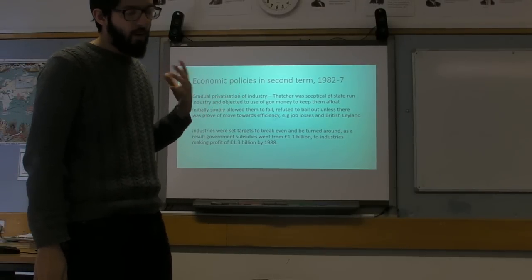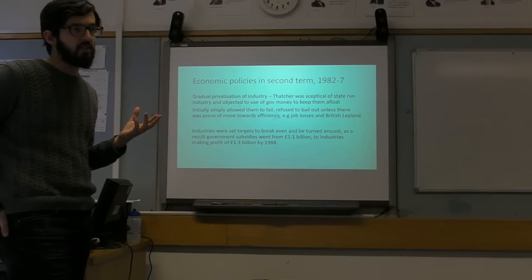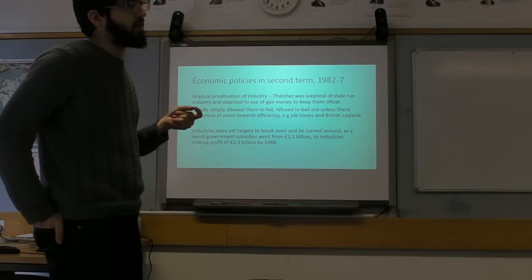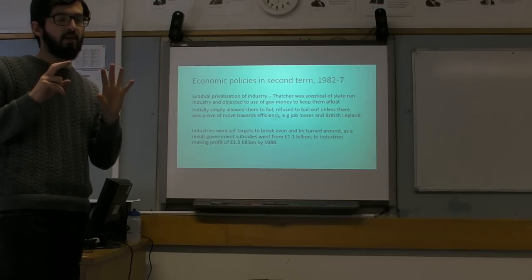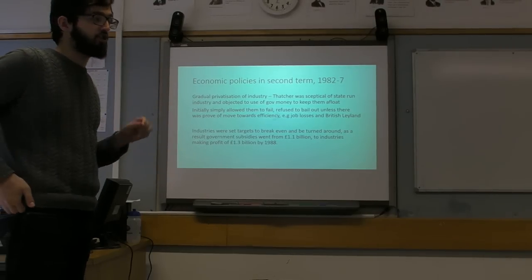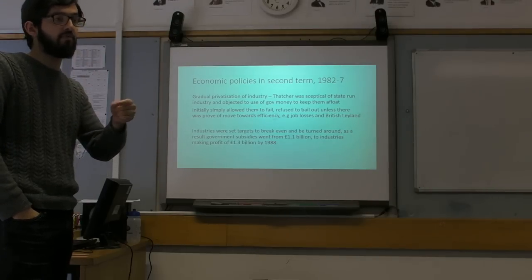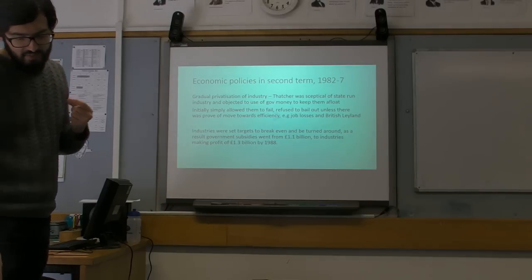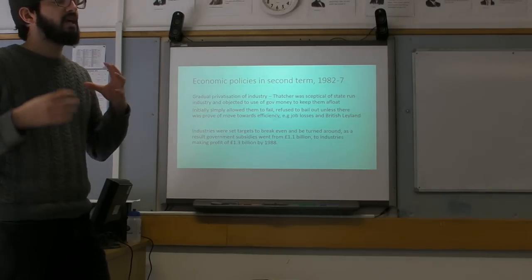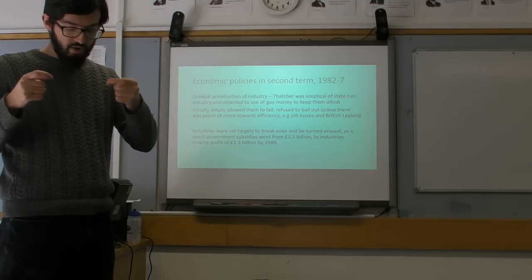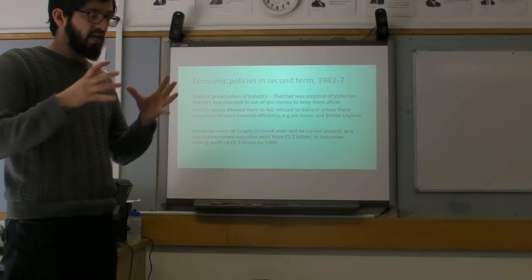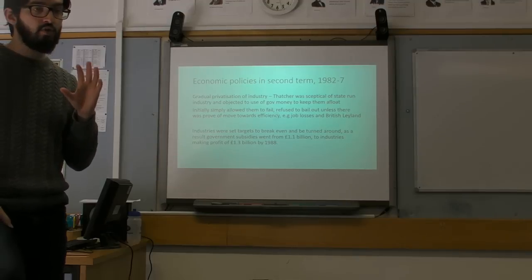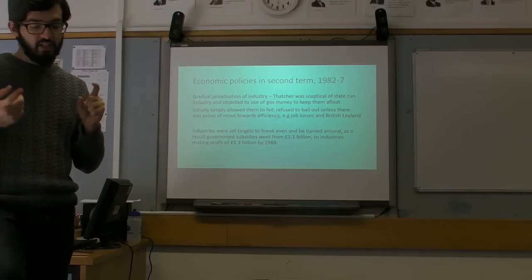The best example of this is British Leyland, which is a car manufacturer. She only gives them a subsidy after they lay off thousands of workers. So proof that you're making efficiency savings is sacking workers. She refuses to give them any money until they lay off workers. Industries would basically be set targets to break even. In other words, stop making losses and eventually start to make profits.